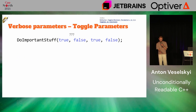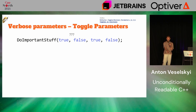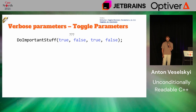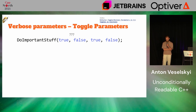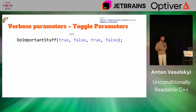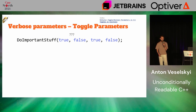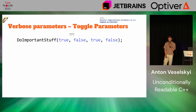The last topic, which is kind of boolean adjacent, is toggle parameters for functions. Look at this function — what does the parameter mean? I don't know, it's hard to tell; you need to hover or go to the header. The worst part is if you want to pass true and false as the last two parameters, but accidentally say false and true, and your code doesn't work. It's a pain to pinpoint why — you'll debug and get that 'aha' moment later.